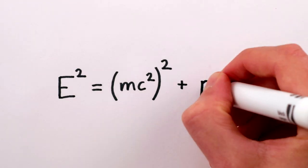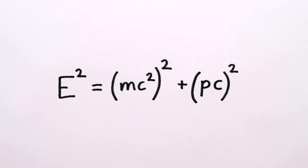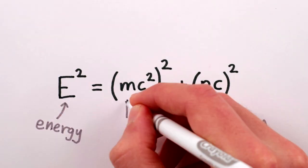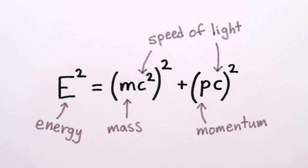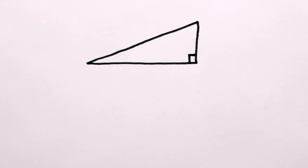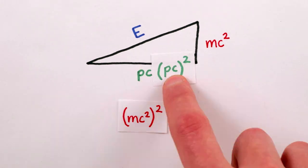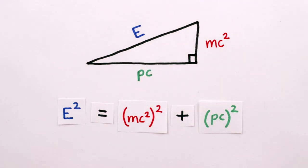The full equation is E squared equals mc squared squared plus p times c squared, where p represents the momentum of the object in question. This might all seem a bit confusing, but in fact you can draw it as a right triangle with sides E, mc squared, and p times c, and just use the Pythagorean theorem a squared plus b squared equals c squared to give you the equation.